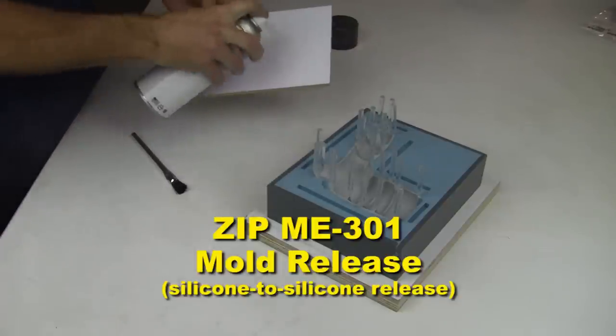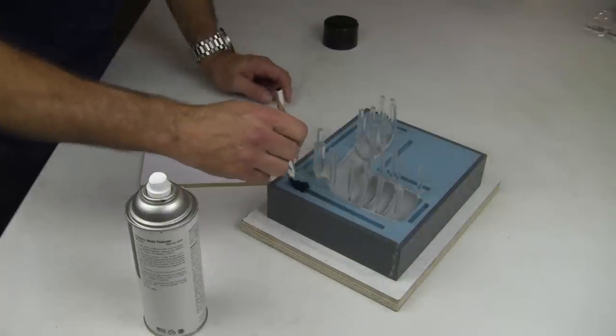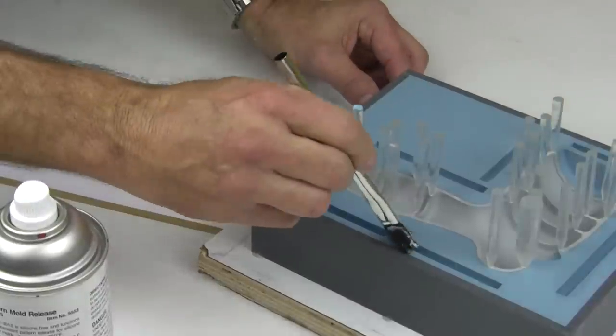Before the mold box is set in place, we will apply a mold release to the deep registration channels using a brush. This also works well for undercuts or other areas that would be difficult for the spray can to reach.